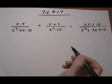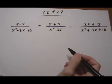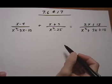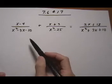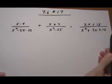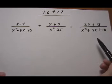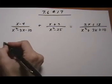7.6 number 17. Here we have an equation with some algebraic fractions in it. What we're going to do is multiply both sides of the equation by the LCD and make the denominators cancel out. So we need to find the LCD.